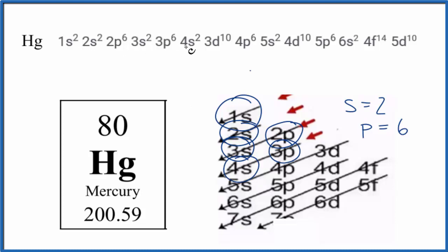3p6, 4s2, so we're just going along until we get to 80 electrons. All these numbers up here, the superscripts, add up to 80.